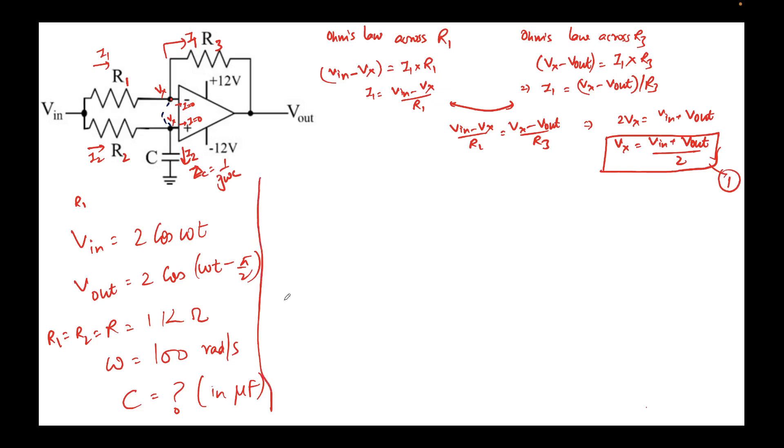Now let's look at the bottom half of the circuit. I will apply Ohm's law across the resistor R_2. I can say V_in minus V_x equals I_2 times R_2. This gives me expression for I_2 as (V_in minus V_out) divided by 2R_2. Let's say this is expression 2.